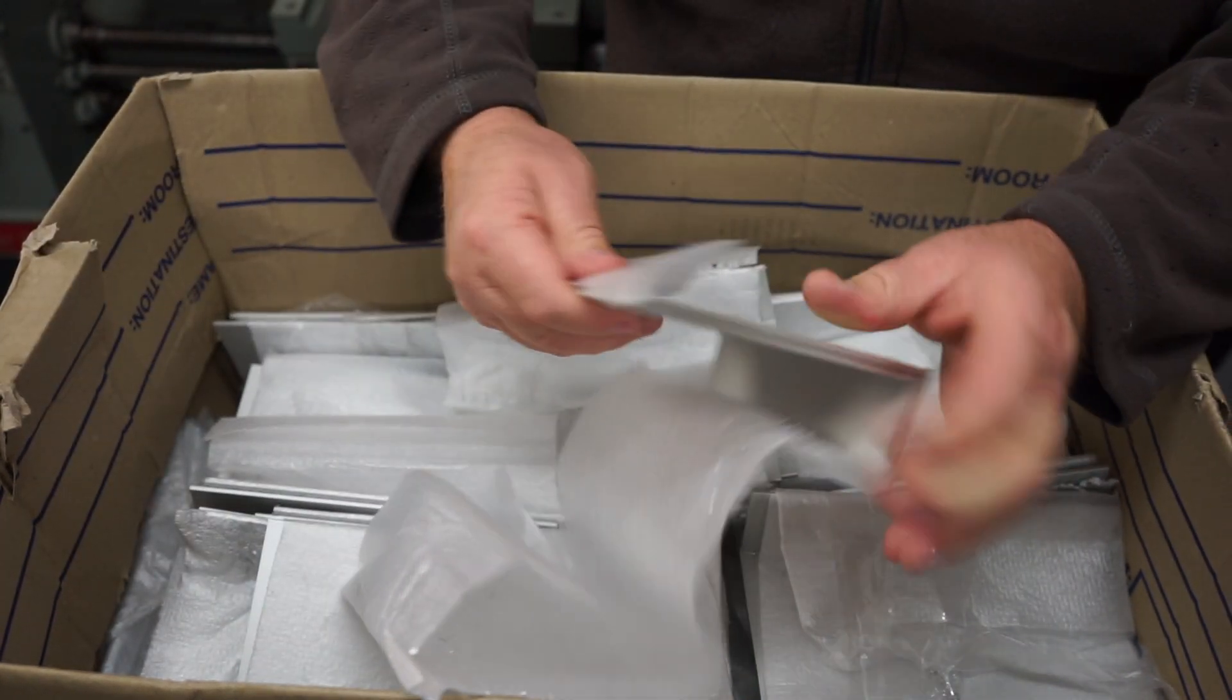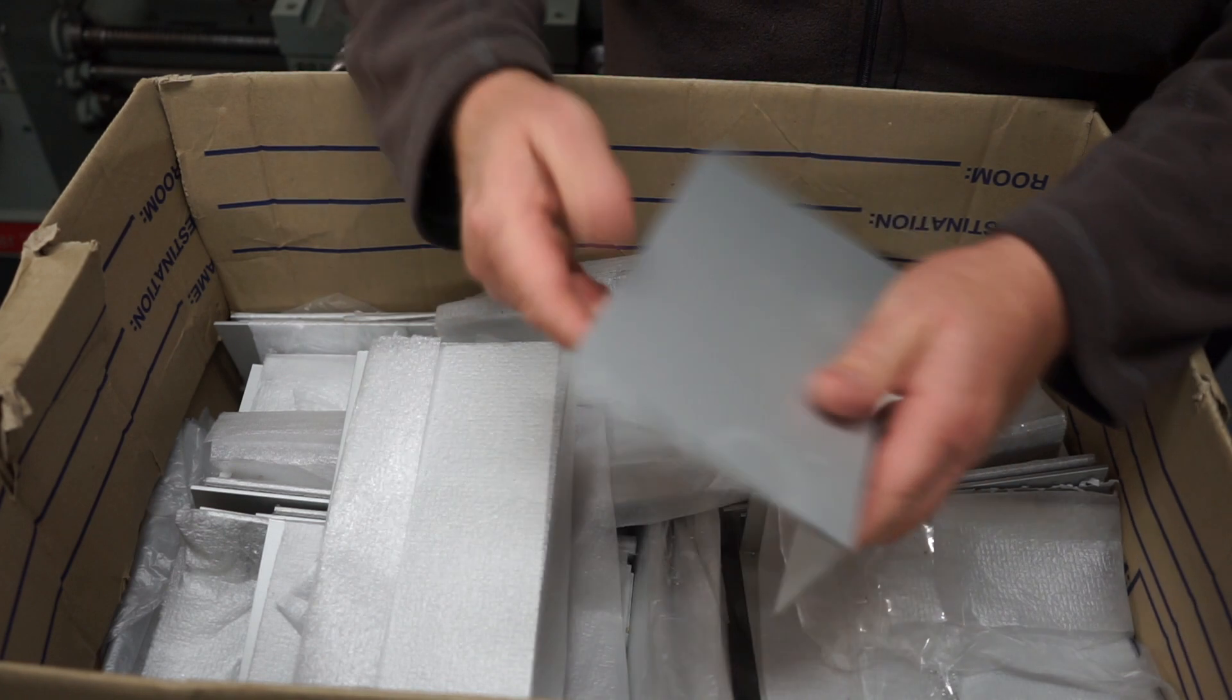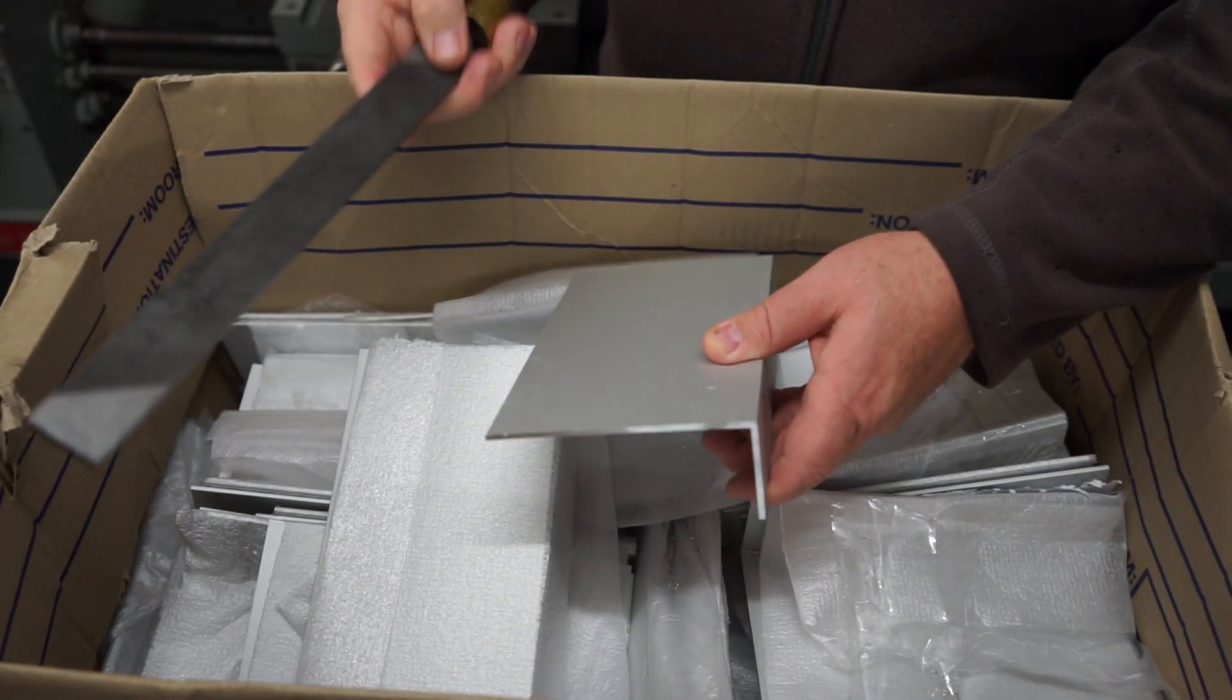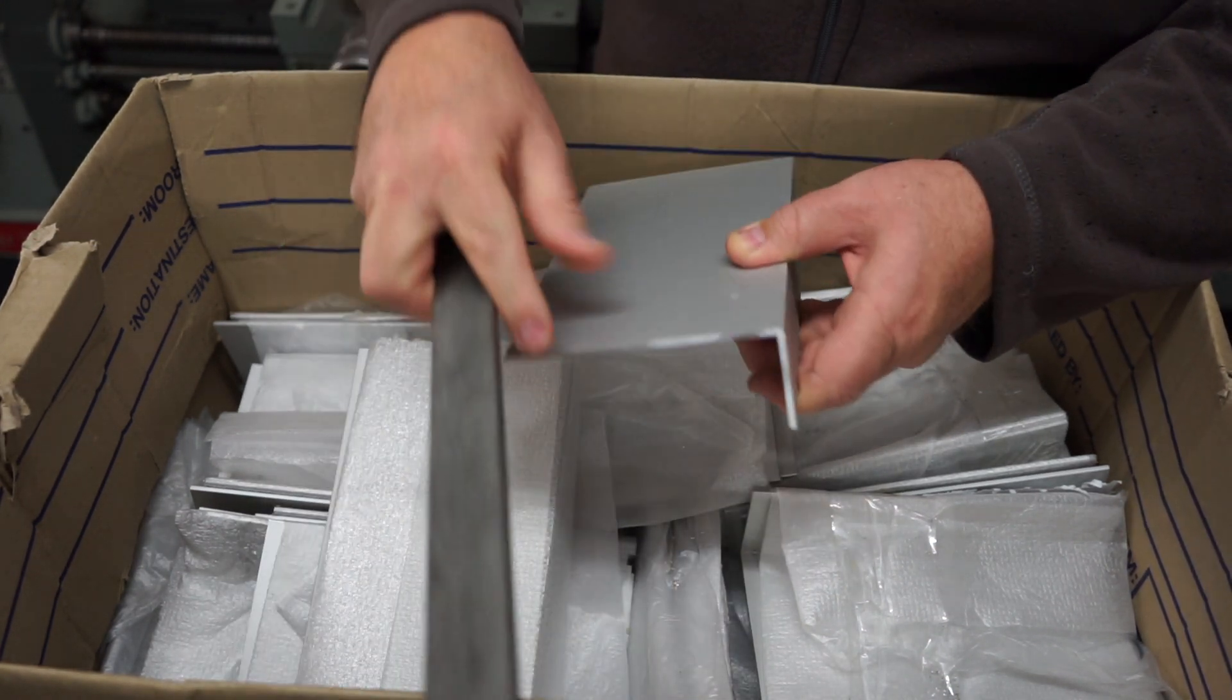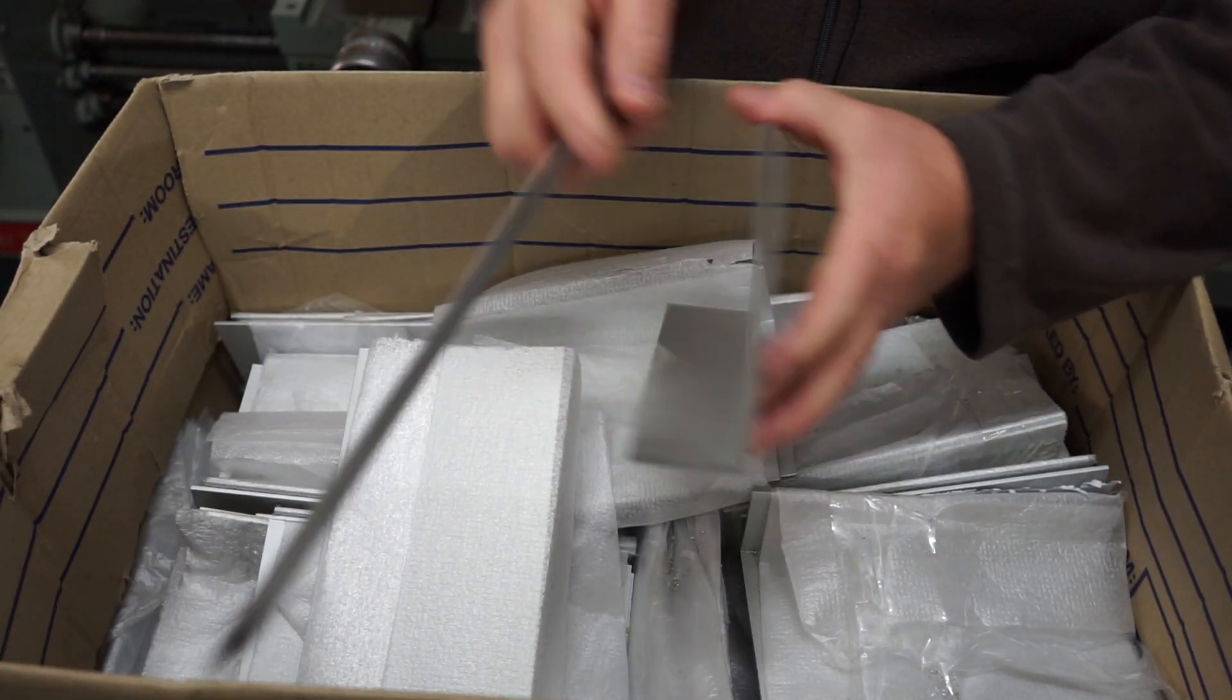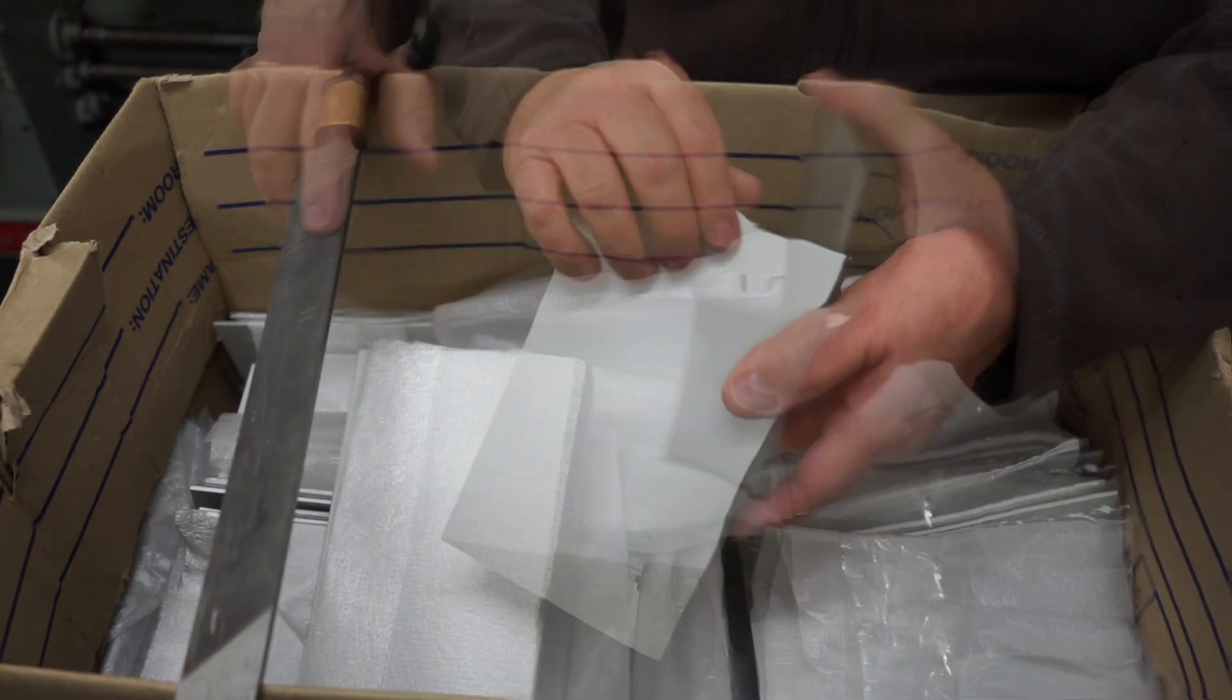I'll actually, unfortunately, have to deburr every one of these by hand. So what I do here is I'll just take my lathe file and just gently one pass over it and take that sharp edge off,